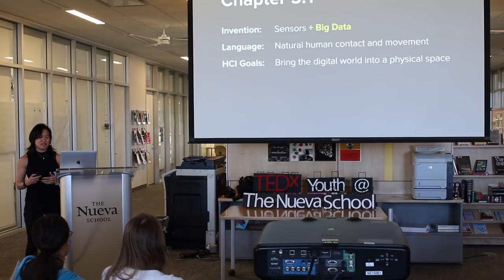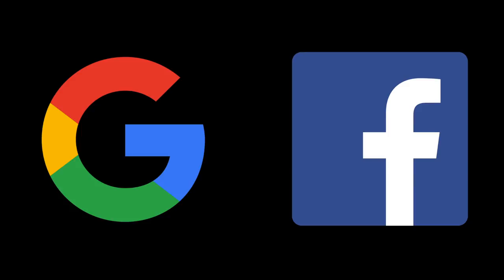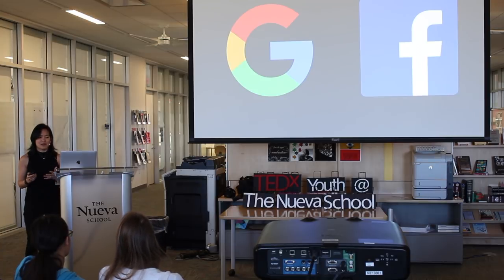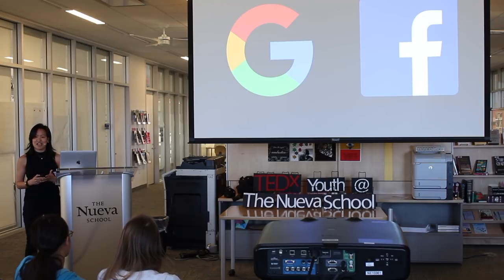As sensors become ubiquitous, we increasingly track every aspect of our lives and may reach a point where computers know more about us than we know about ourselves. Already, Google and Facebook algorithms know exactly how you feel. Facebook only needs 10 likes from you to outperform predictions from work colleagues about your preferences, personality, and dispositions. They need only about 70 likes to outperform your friends, 150 to outperform family members, and 300 to outperform spouses.